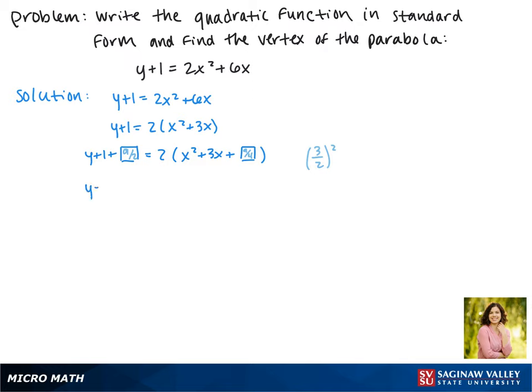On the left we'll make this 1 into 2 over 2 so that we can add it to 9 halves. On the right we're going to complete the square. So this becomes x plus 3 halves all squared when we factor that trinomial.